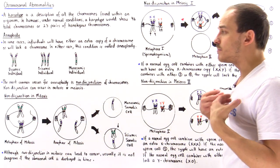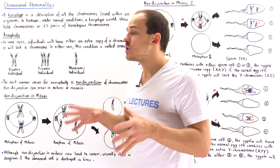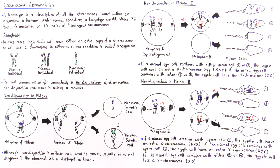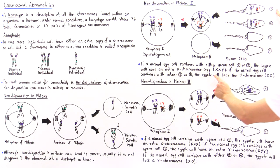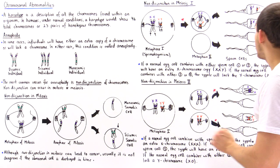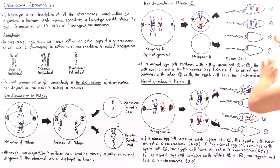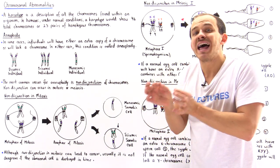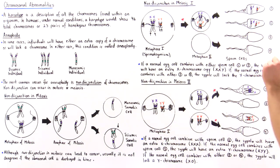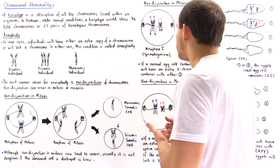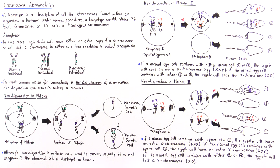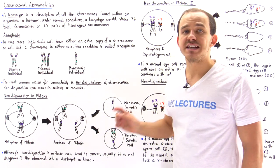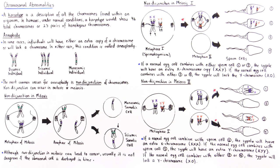As long as our immune system can protect our body from those abnormal cells, we should have no problem. So if a normal egg cell combines with either sperm cell one or sperm cell two, the zygote will have an extra X chromosome copy — we'll have XXY. Now, if the normal egg cell combines with either sperm cell three or four, we're going to have a zygote in which we lack the Y chromosome and have only one X chromosome. This condition is known as XO, where O means we don't have that second sex chromosome. This is non-disjunction taking place in meiosis 1, more specifically in anaphase 1 of meiosis. We can also have non-disjunction taking place in meiosis 2, more specifically in anaphase 2 of meiosis.